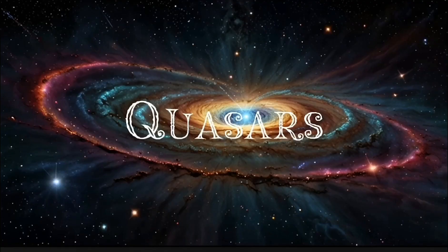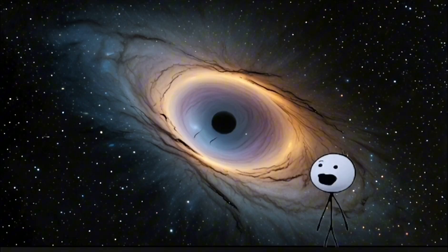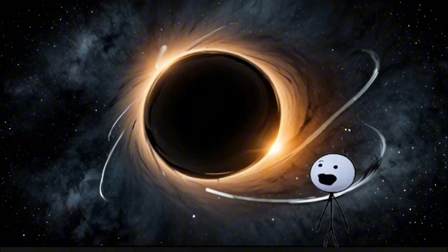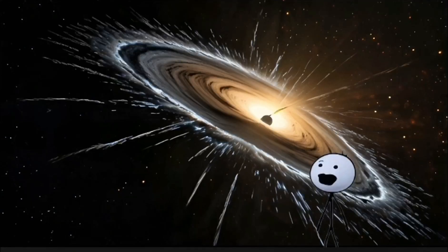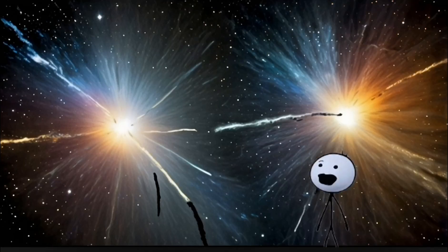Number 5: Quasars. Quasars are the brightest objects in the universe, and they're powered by supermassive black holes eating everything around them. Yes, you heard that right. The most luminous objects we've ever observed are powered by the darkest ones. A single quasar can outshine an entire galaxy.